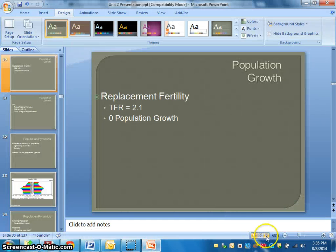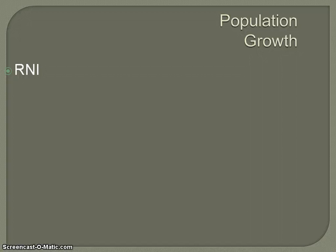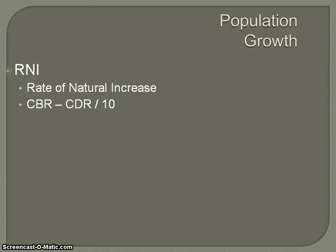The last number we're going to talk about is the rate of natural increase, which is talking about the overall population. The way we get this number is by taking the crude birth rate, subtracting the crude death rate, and dividing by 10. The larger the rate of natural increase year over year, the more proportional growth in population. Typically you're going to see rates of natural increase that are much higher in less developed countries versus more developed countries, where they tend to be lower.